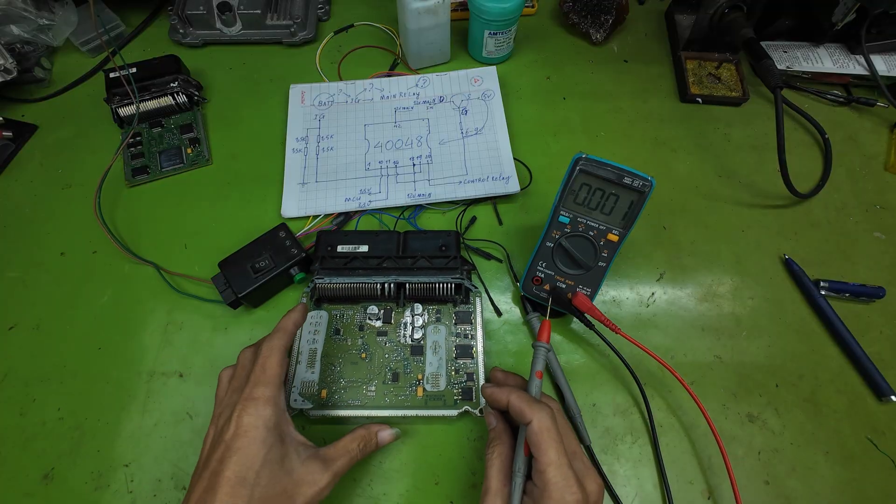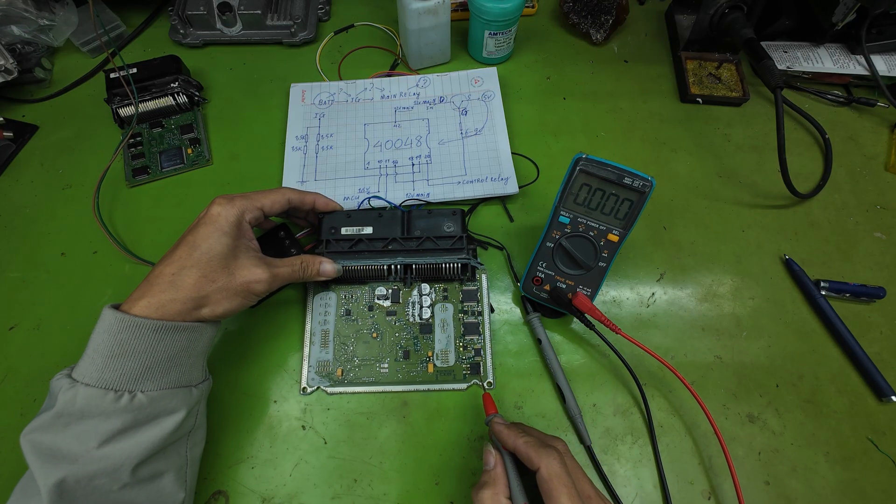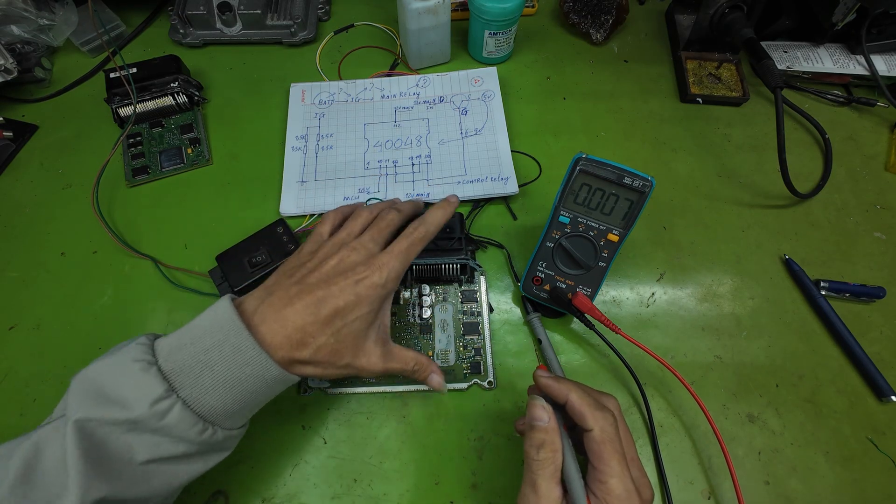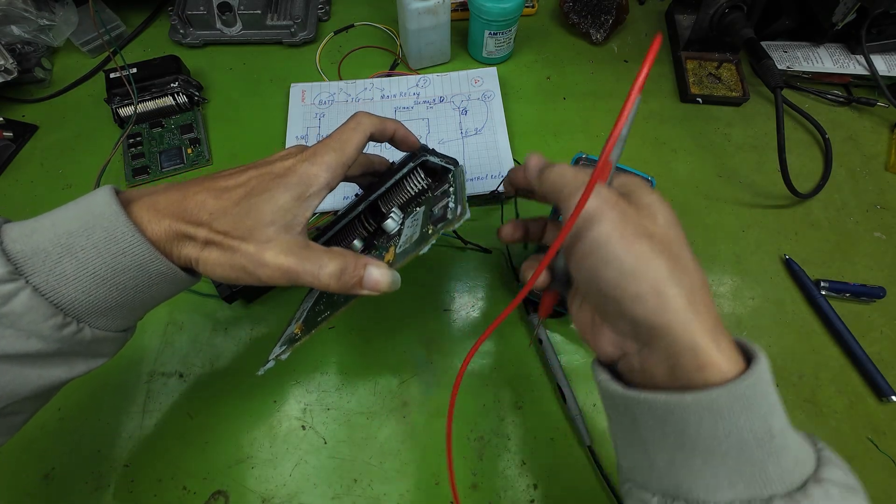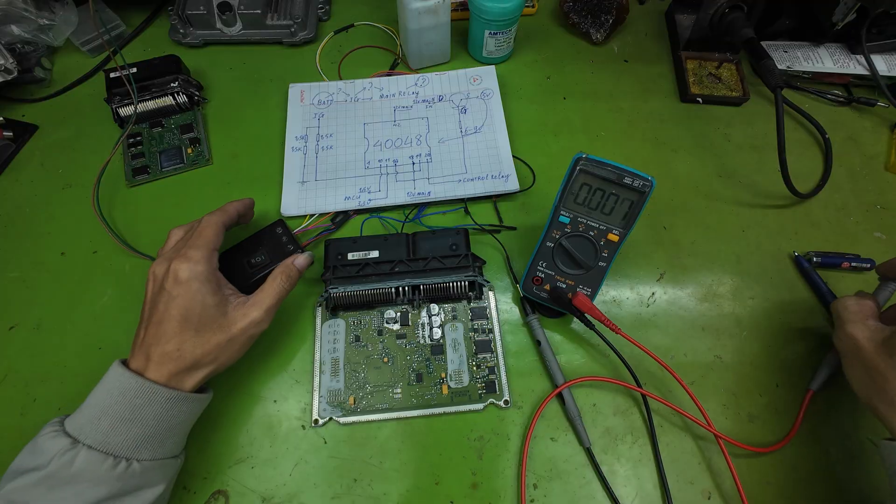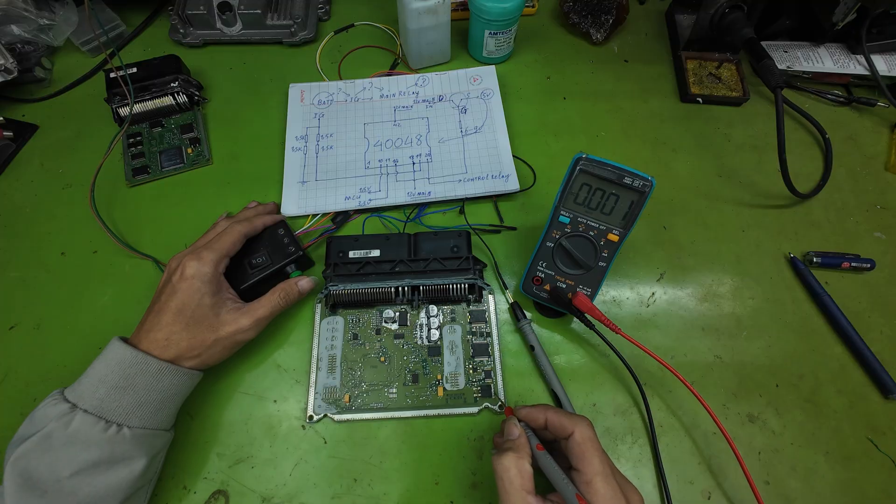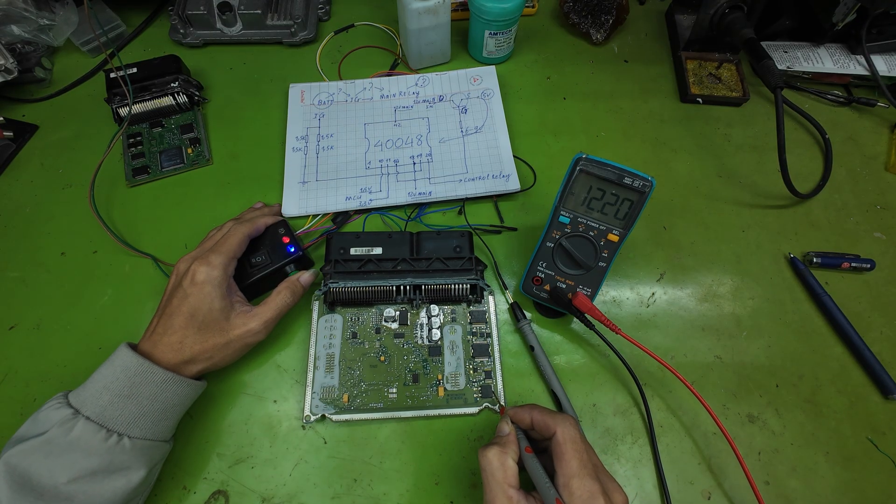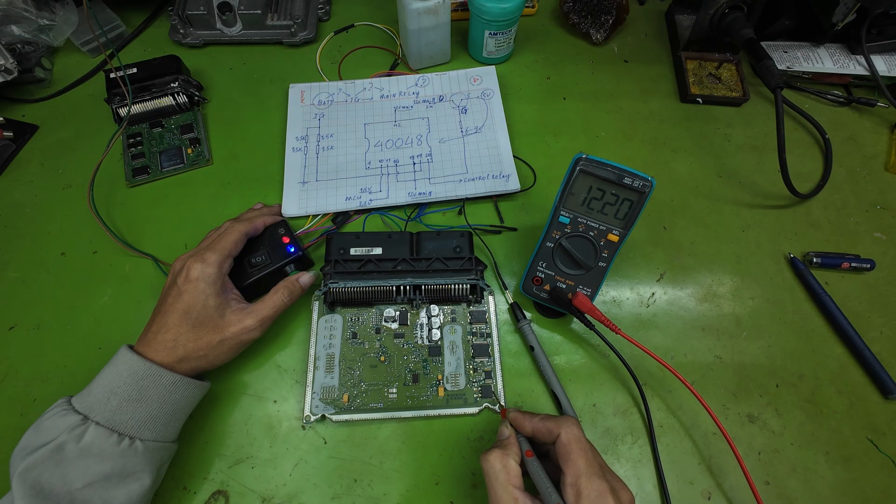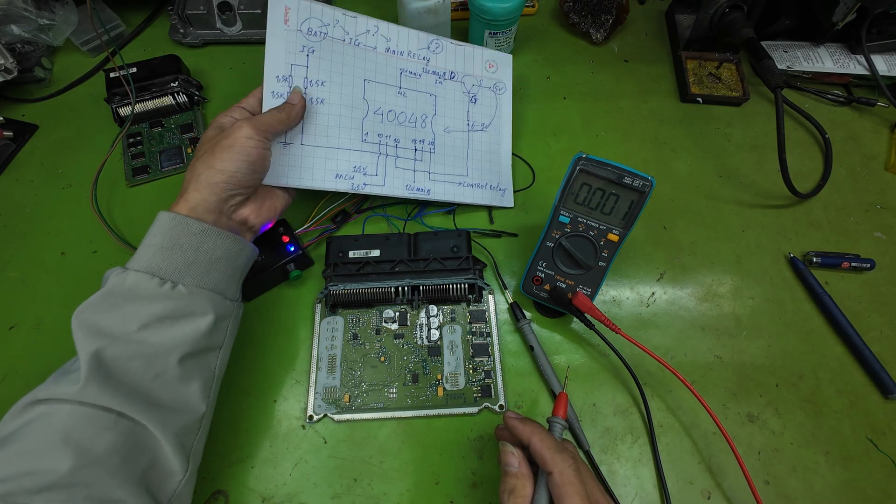In this ECU, the MOSFET is located on the side of the main board. This is the one right here. During the measurement process, remember to keep the power supply jumper wires organized. If you accidentally short them to the main board, the ECU can be damaged. Now we can see that the 12-volt post-relay voltage is also present at the D-pin of the MOSFET.